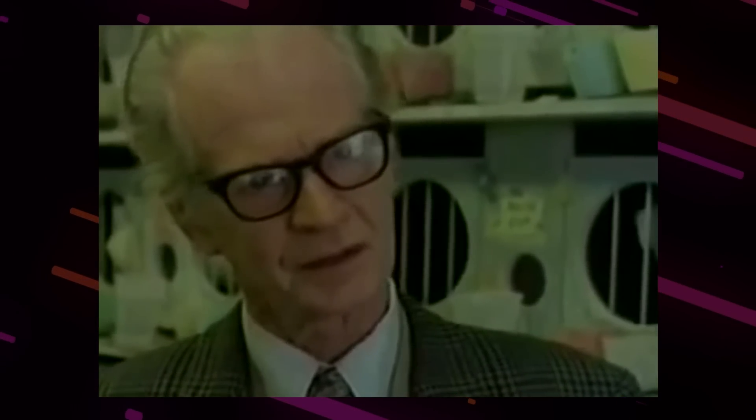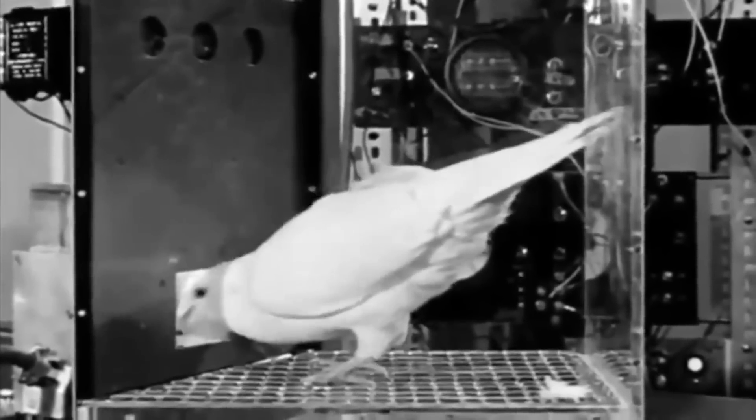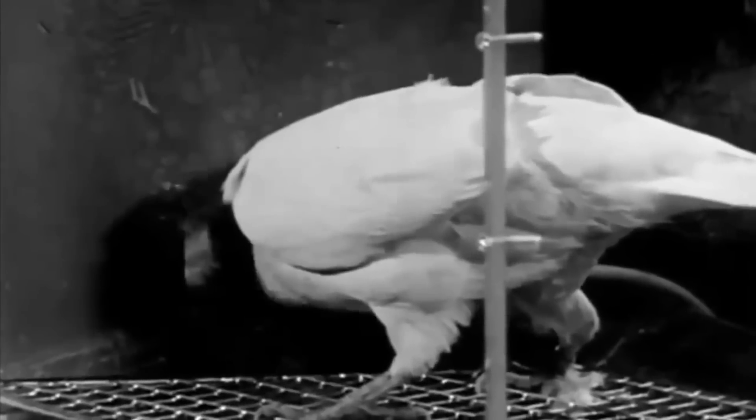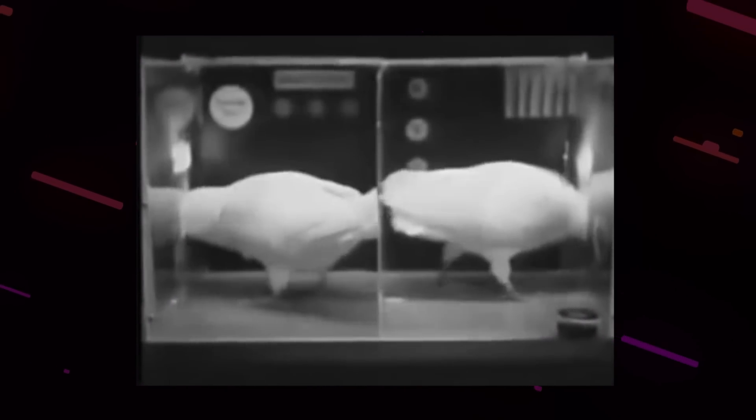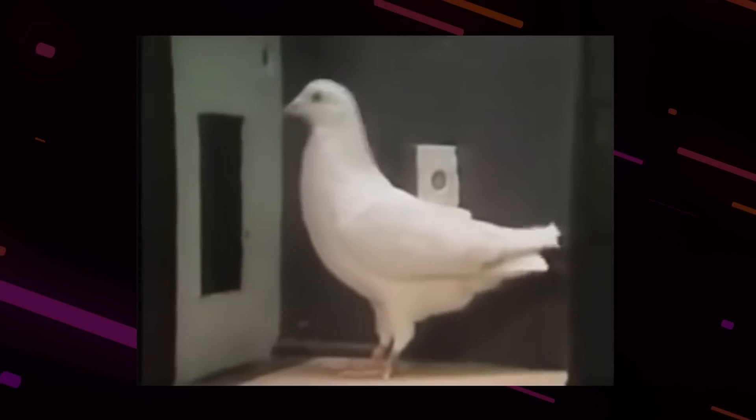But the most intriguing part of the experiment began when the scientists set up the devices to dispense food randomly. Food was delivered to the cage at certain intervals, regardless of the pigeons' actions. However, such chaos didn't sit well with the birds. They began to associate food delivery with completely unrelated behaviors. If a pigeon was standing with its neck stretched when food was delivered, from its perspective, that action caused the food to be dispensed.